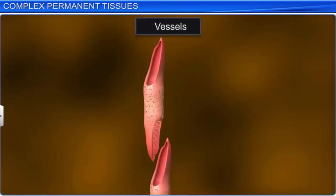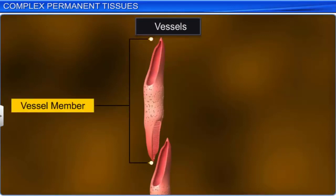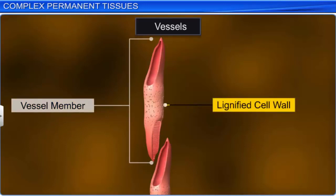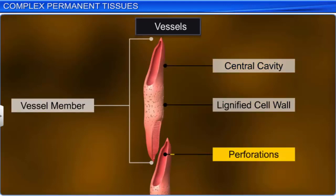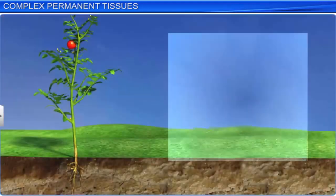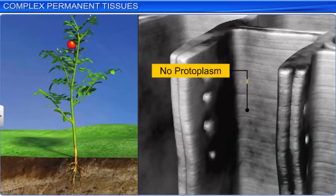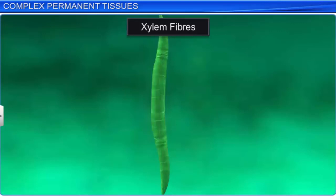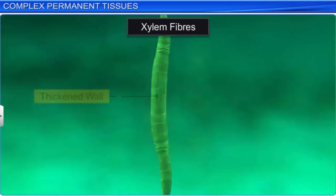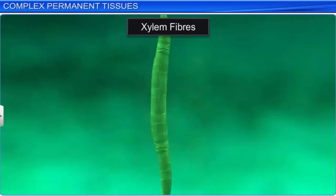Vessels are long, tube-like structures composed of many cells called vessel members. Vessel members have lignified walls and a large central cavity. They are interconnected through perforations in their common walls. Typically, vessels are found in all angiosperms, and vessel cells do not have protoplasm. Xylem fibers are sclerenchymatous fibers associated with the xylem. They have highly thickened walls and obliterated central lumens. These may be septate or aseptate.